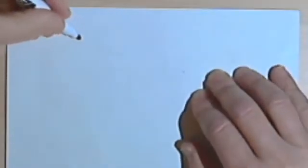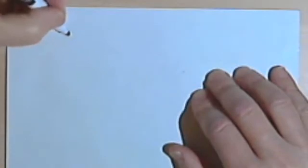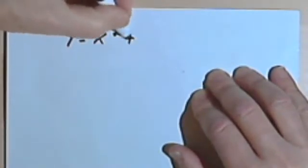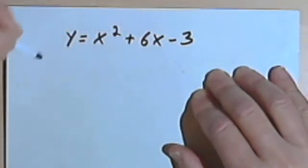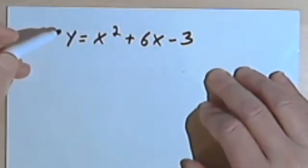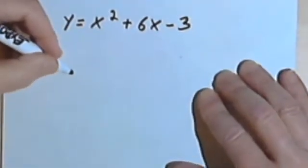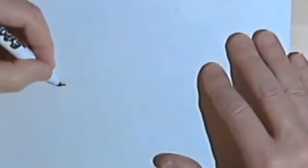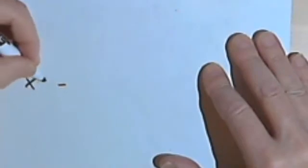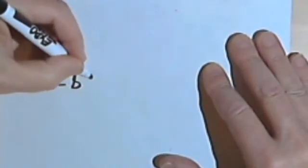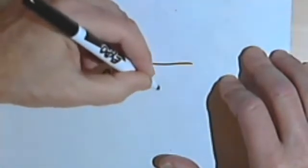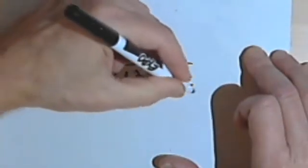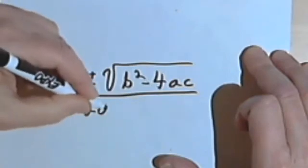We're going to use, let's say we have the equation y equals x squared plus 6x minus 3. Now, there's a nice way to find the vertex for this. You remember the quadratic formula: x equals negative b plus or minus the square root of b squared minus 4ac over 2a.